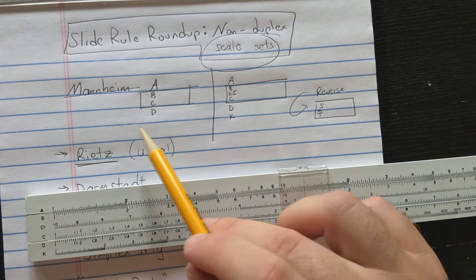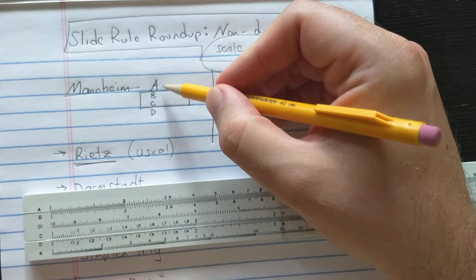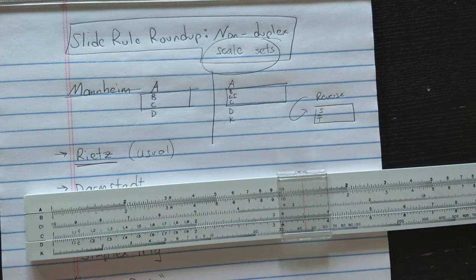Let's get started with the simplest. The Mannheim layout, named after a French artillery officer from the 19th century, contains the A scale and the D scale on the base and the B and C on the slide so that it reads A, B, C, D, like that.